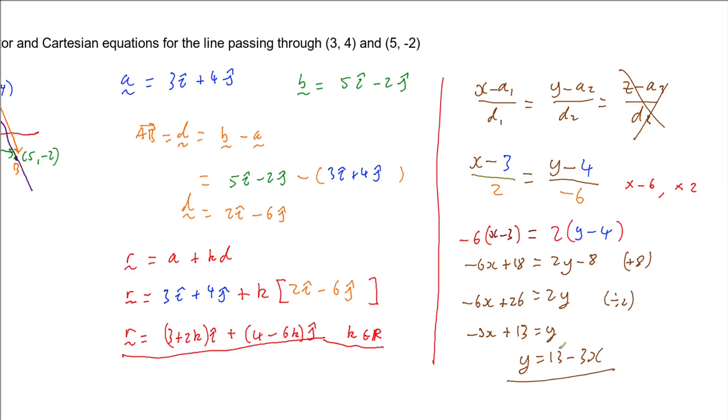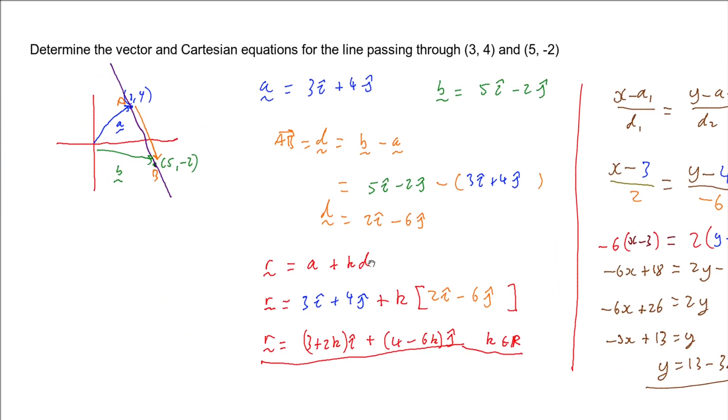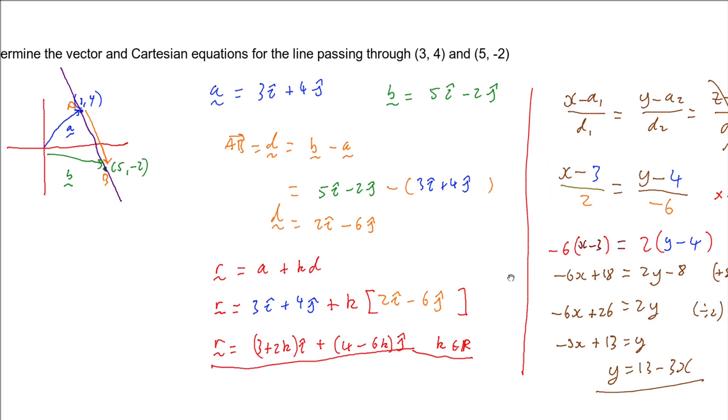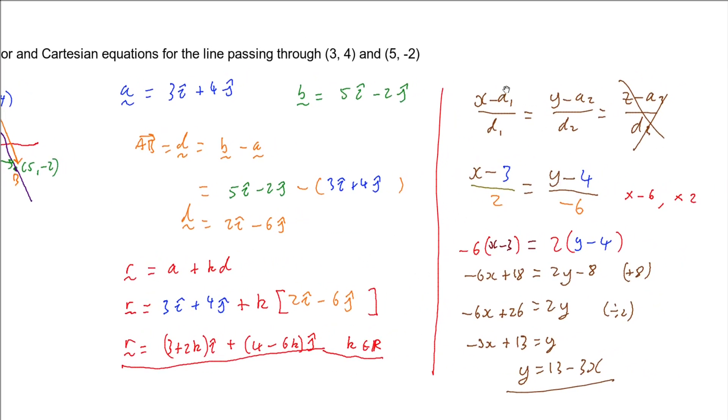To get the vector equation of the line passing through two points, we set up the vector to the two points, find the vector going from point A to point B, use our vector form, and tidy it up. And then use that same information with our Cartesian form, and then simplify if it's only two dimensions, because we can.